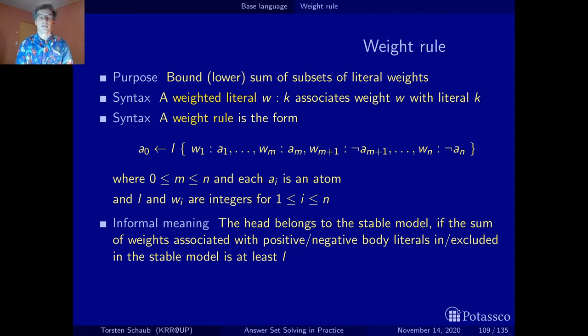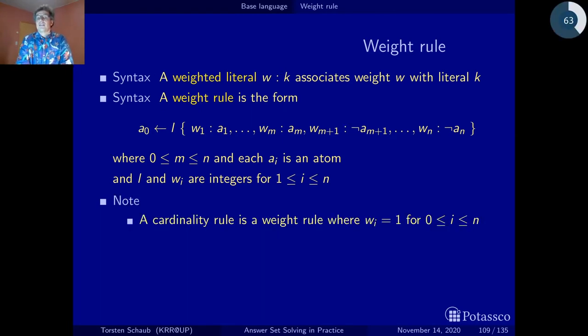So what else is there to say? Well, in the same way as I said before that weight rules are generalizations of cardinality rules, one can make this precise by saying that a cardinality rule is a weight rule with weight one. In this way we could have saved ourselves from looking at cardinality rules and just looked at weight rules, but I'm afraid cardinality rules are still a little bit easier to understand.